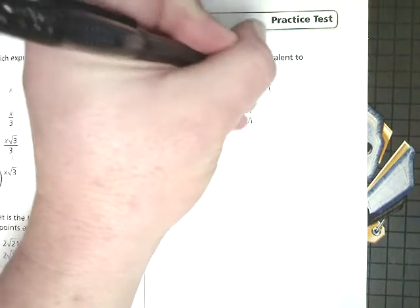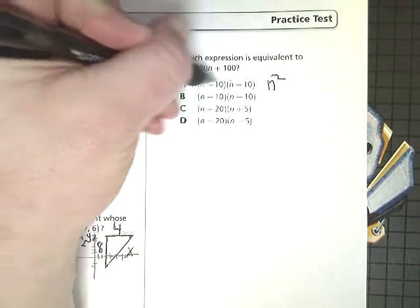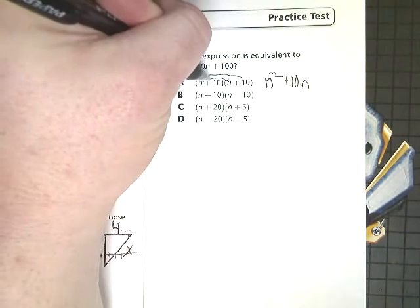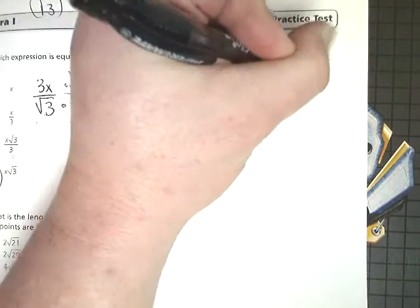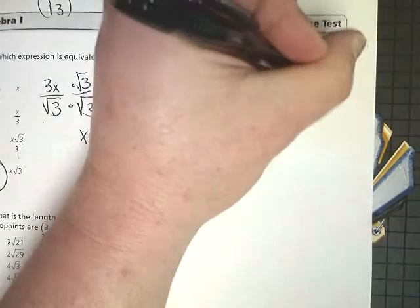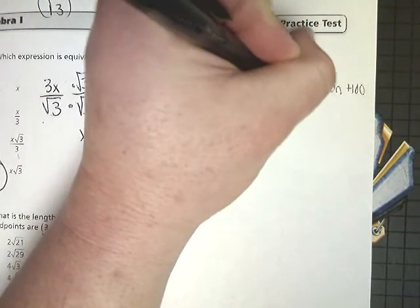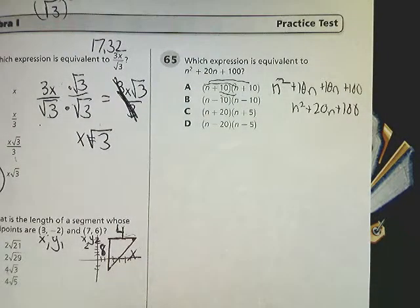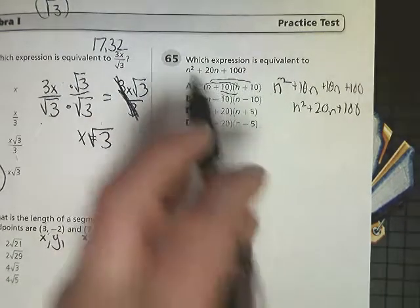So if I did N times N, that gives me N squared. N times 10 gives you 10N. 10 times N gives you another 10N. And then 10 times 10, which is 100. Combine these two together. Oh my goodness, there's the answer. See how it matches up here? So the answer is A.